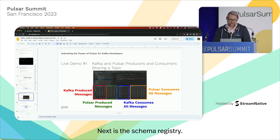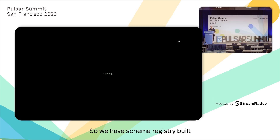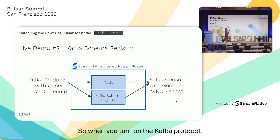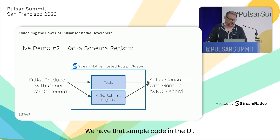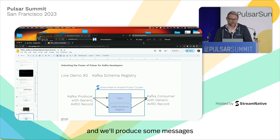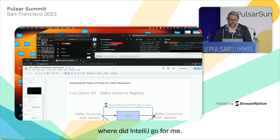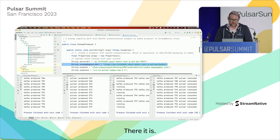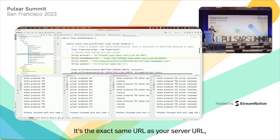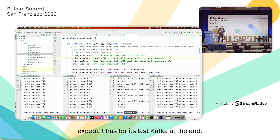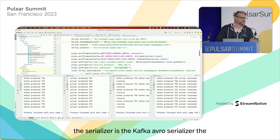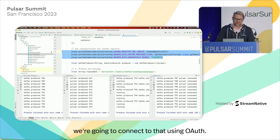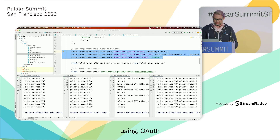Next is the schema registry demo. We have schema registry built inside of your Pulsar cluster. When you turn on the Kafka protocol, we turn on the Kafka schema registry for you. At this point, I've added another URL — it's the exact same URL as your server URL, except it has forward slash Kafka at the end. That's the Kafka endpoint for the schema. The serializer here is the Kafka Avro serializer, and we connect to both the server and to the schema registry using OAuth.